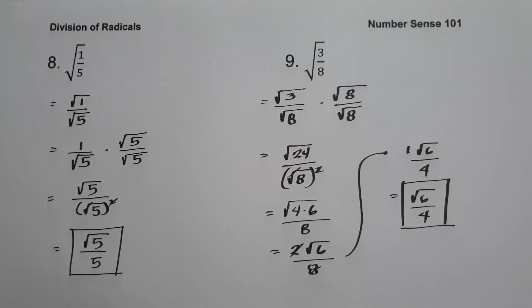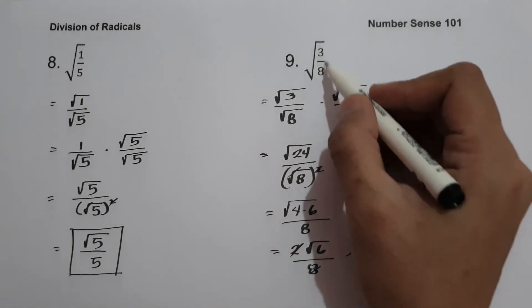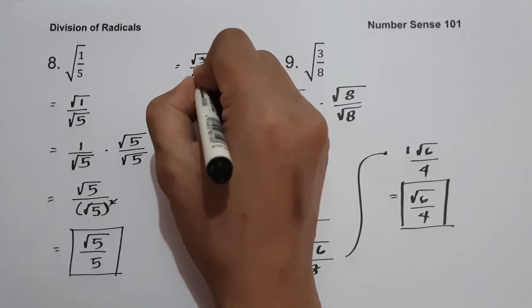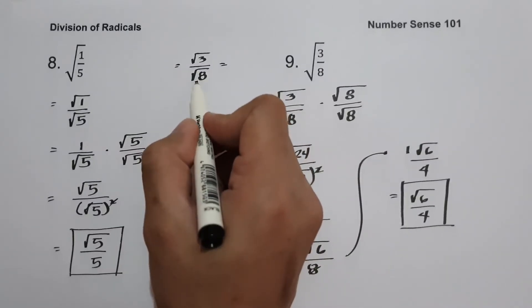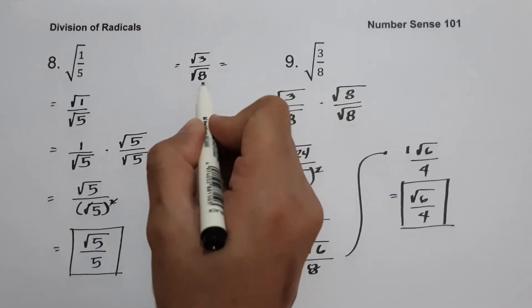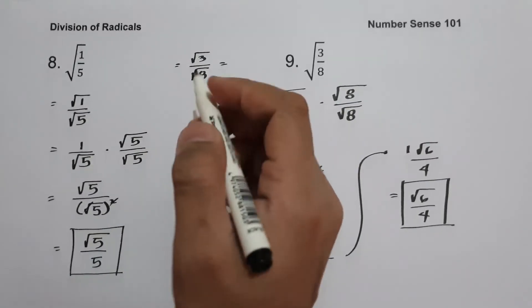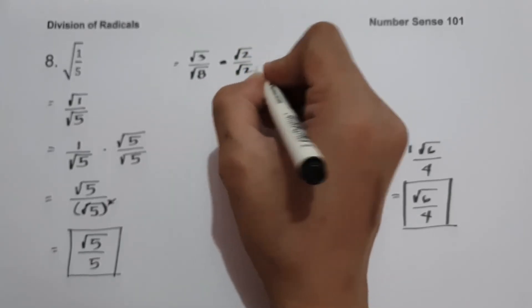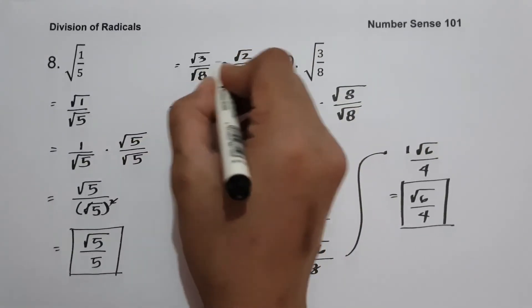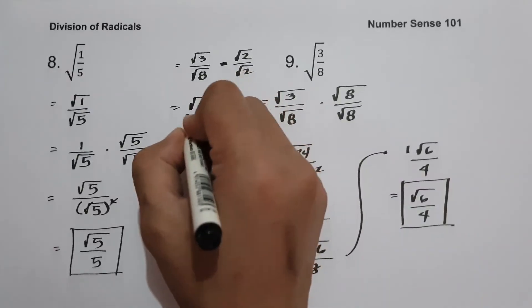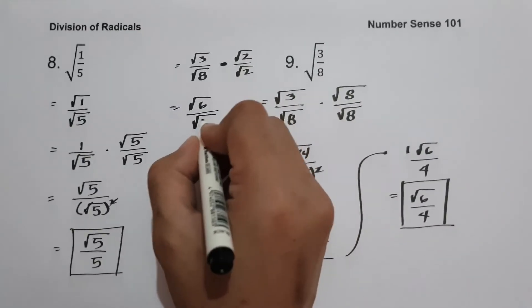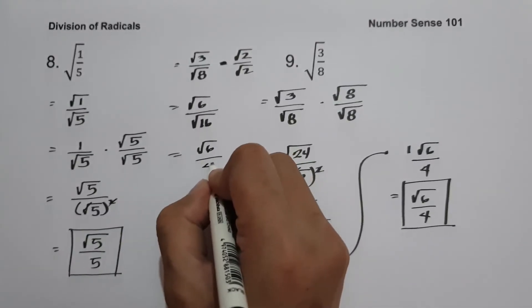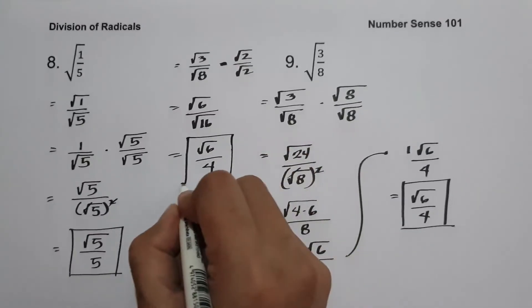Here is another solution for square root of 3 over 8. We have square root of 3 over square root of 8, and we want the denominator to become a perfect square. So we multiply by square root of 2. Square root of 3 times square root of 2 is square root of 6, and square root of 8 times square root of 2 is square root of 16, and the square root of 16 is 4. As you can see, we get the same answer: square root of 6 over 4.